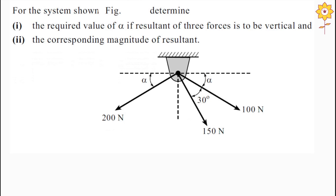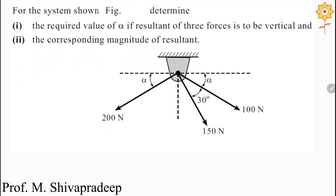This is the given problem. For the system shown in the figure, we have to determine two things: first, the required value of alpha if the resultant of three forces is to be vertical, and second, the corresponding magnitude of the resultant.